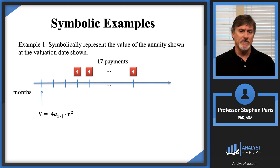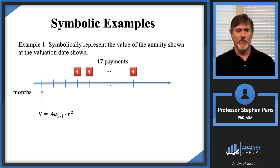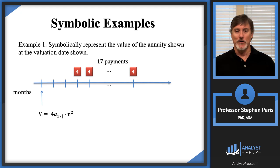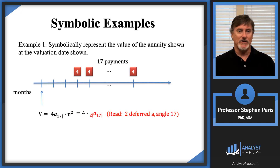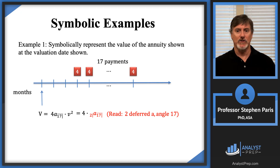I wanted to introduce this because there's some actual notation you're expected to know on the exam for this type of annuity. This type of annuity is called a deferred annuity. The symbol for A-angle-17 times V-squared can be represented by the symbol in red — that's read as a two-deferred. That vertical bar is read as 'deferred': two-deferred A-angle-17.